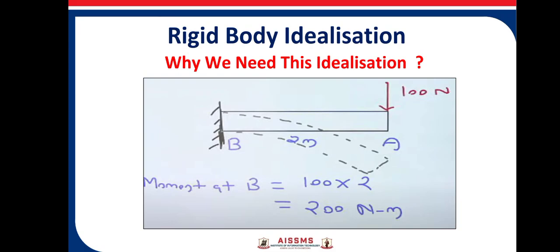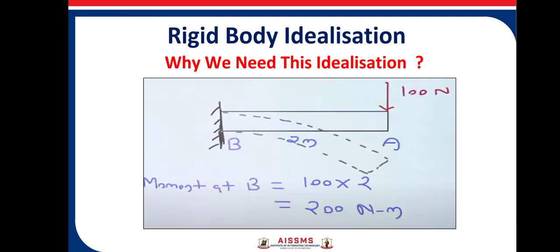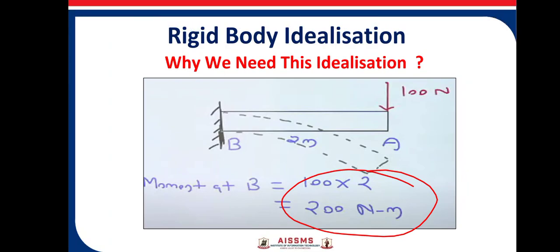You are going to multiply 100 with distance between point A and B which is 2 meters. So moment becomes 200 Newton meter. But is this calculation the exact value? No. Why? Understand. When you apply force on this beam, it is not going to be straight. This body, in actuality, this body is going to deform under this force as shown in figure.